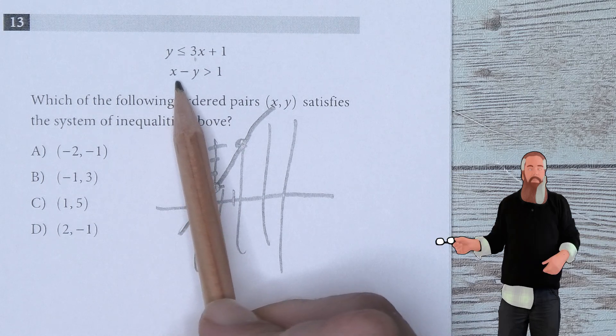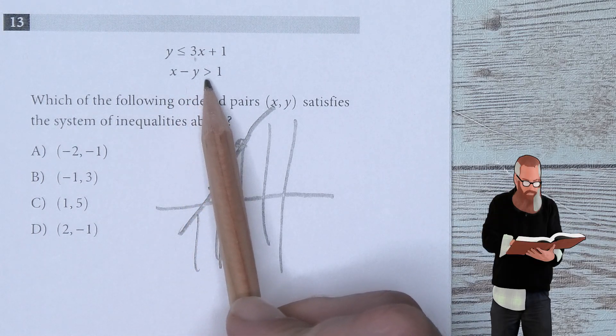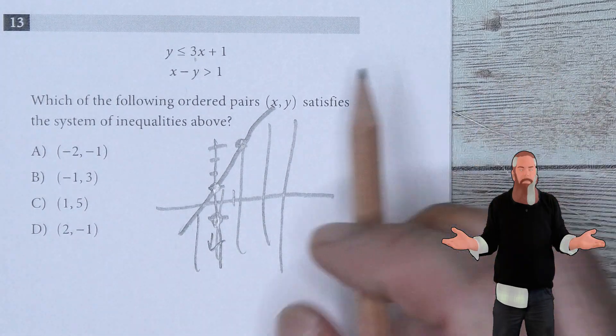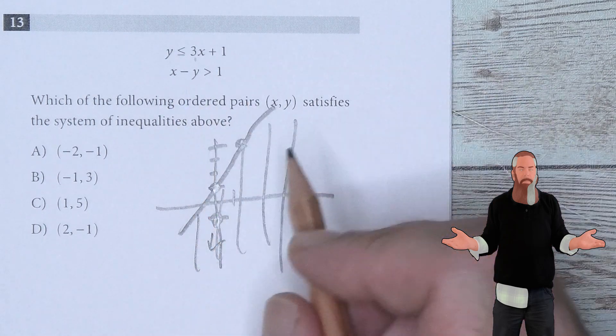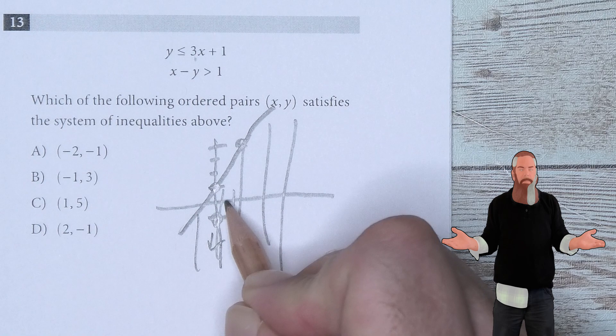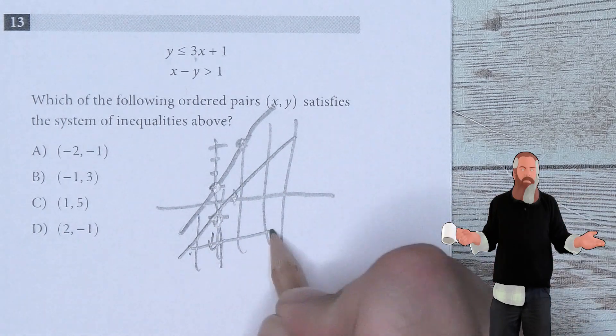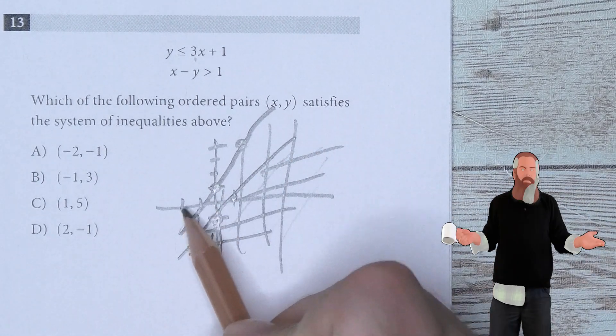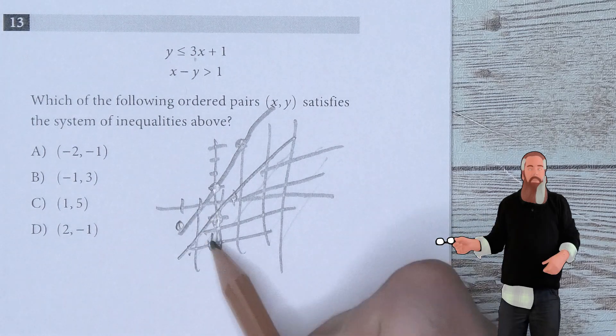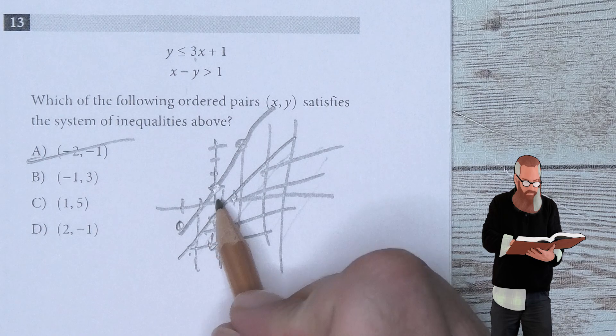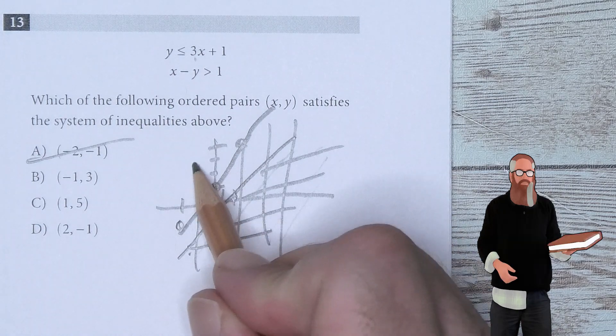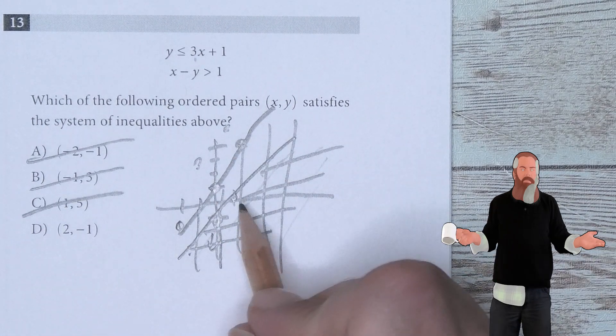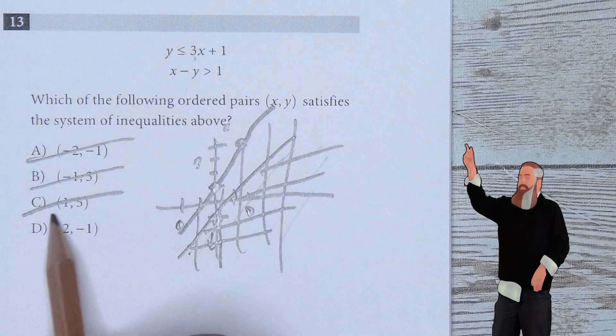If Y was 0, then X is greater than +1. Now I have two lines with a shaded region for both, and it's only this double-shaded region that actually works. So (-2,-1) is not in the double-shaded region. A is out. (-1,3) would be somewhere here, so it's out. (1,5) would be up here, it's out. And (2,-1) would be about here. So D is the answer.